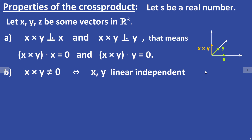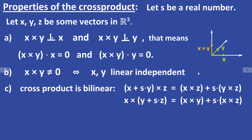The cross product becomes zero if one vector is a scalar multiple of the other. The cross product is bilinear, meaning (X + SY) × Z = X × Z + S(Y × Z), and X × (Y + SZ) = X × Y + S(X × Z).